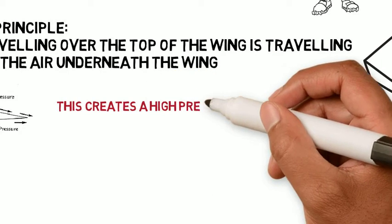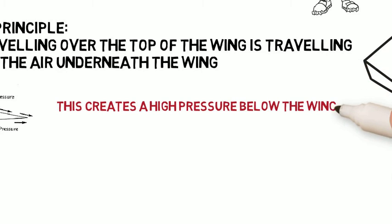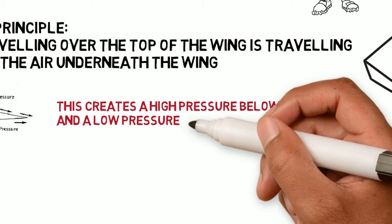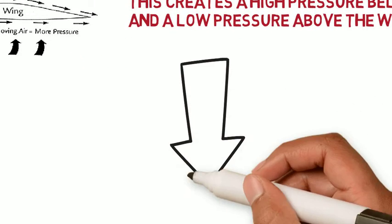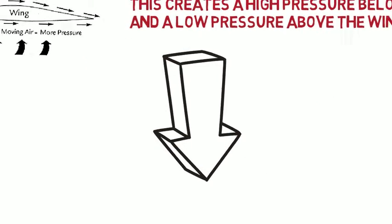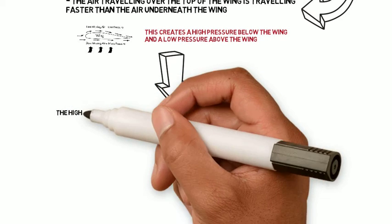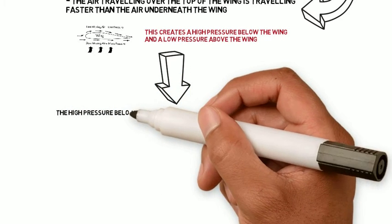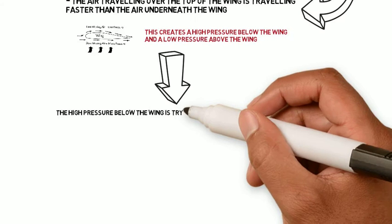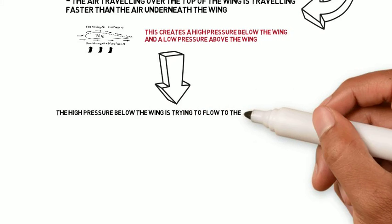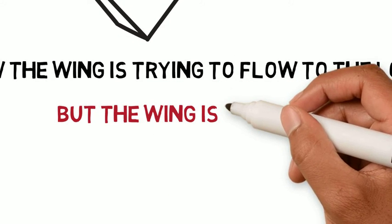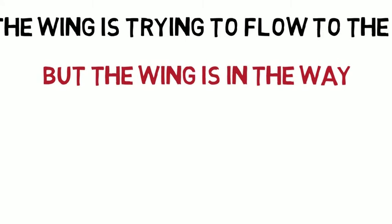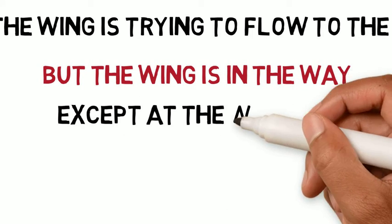Because there's high pressure below the wing and lower pressure above the wing, that high pressure below the wing tries to flow toward the low pressure above the wing. But the wing is in the way, so that airflow is blocked — except at the wing tips.